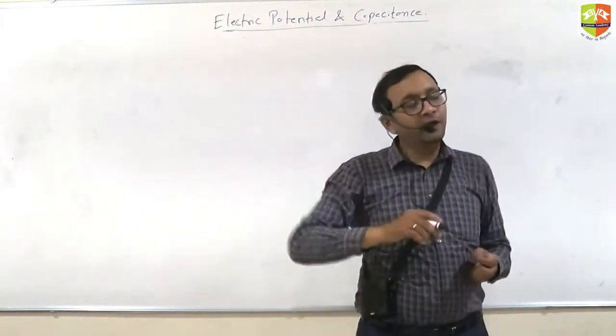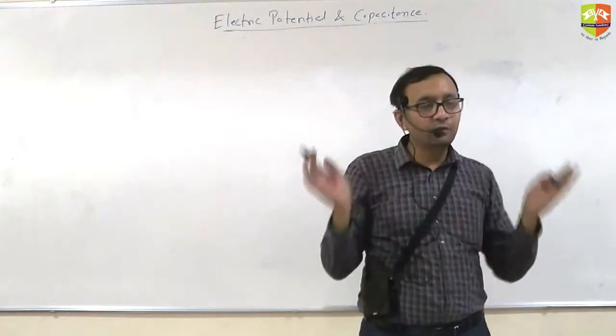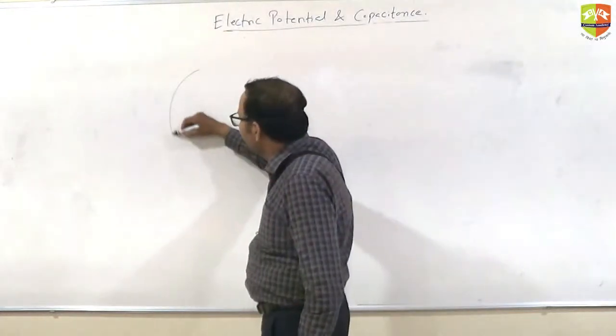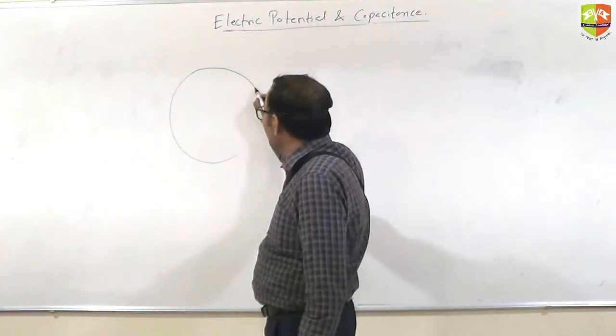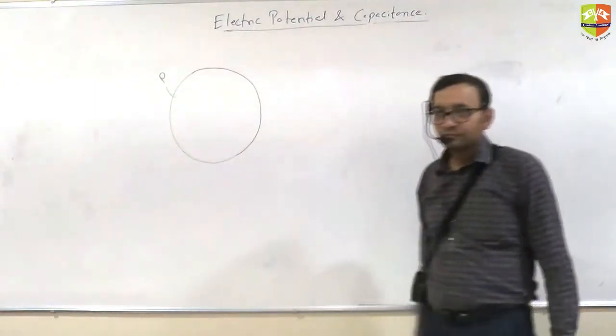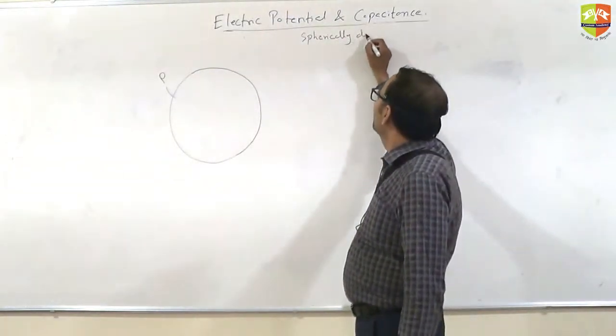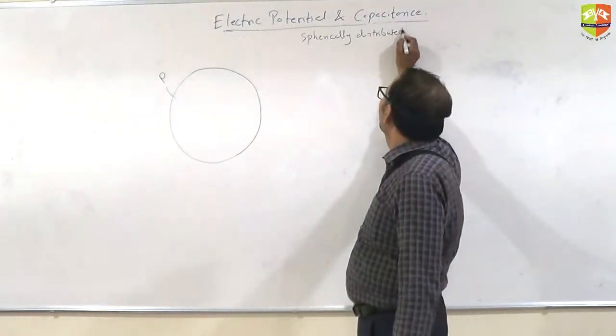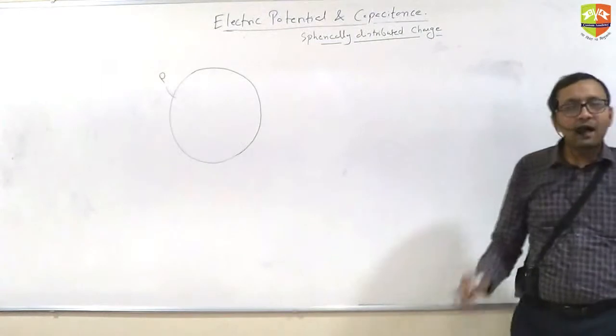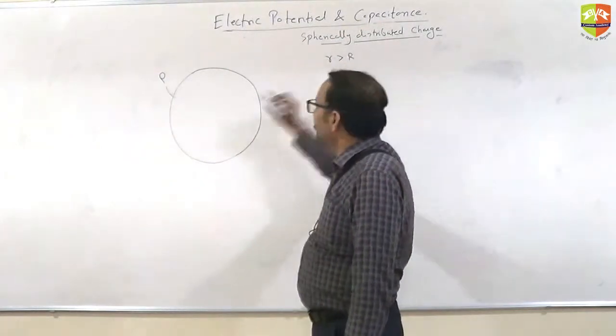I am trying to find out the potential due to a spherical charge which is distributed in the volume. So you have a solid sphere, this is a non-metallic sphere and charges are uniformly distributed in the volume. Let's say volume charge density is rho. Spherically distributed charge. I am trying to find out the potential of this entire charge at a distance r which is greater than capital R. Then what should it be?